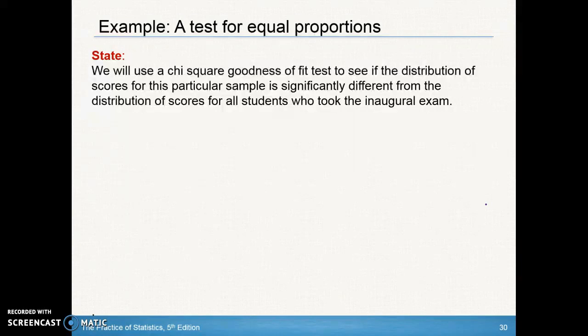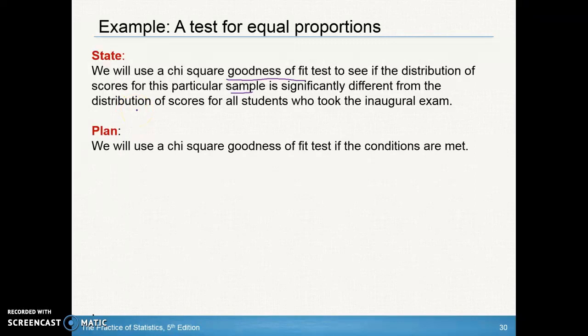We're going to do our state portion first. Notice we're stating we're using a chi-square goodness of fit test, and we want to include that it's a goodness of fit test because later on we'll have different types of tests to see if the distribution of scores for this sample is significantly different from the distribution of scores for all students who took the initial exam. What's our plan? Our plan is stating that we're going to use a chi-square goodness of fit test if the conditions are met. So let's do our conditions.